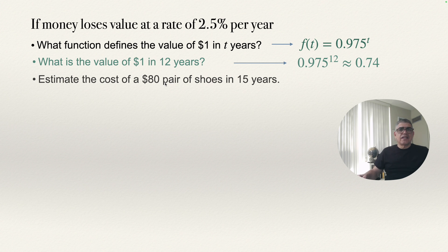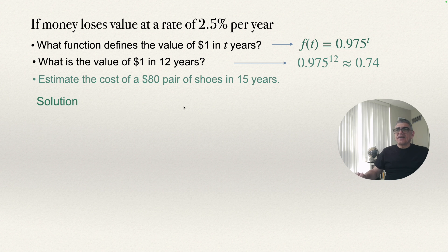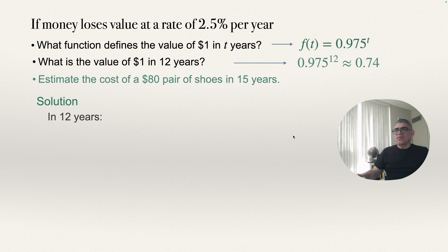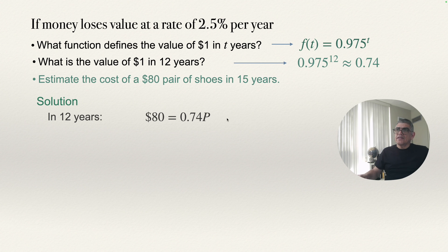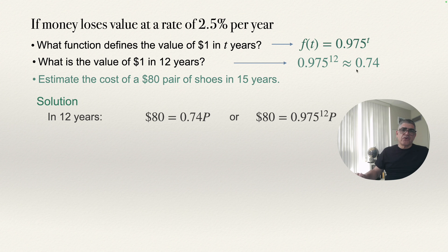Now we can answer the last question: estimate the cost of an $80 pair of shoes in 15 years. Let's write the solution. We know that in 12 years I can buy only 0.74 of something I can buy now with one dollar. So in 12 years, with $80, I can buy 0.74 of whatever I can buy now with $80 — for example, this pair of shoes. Or I can say with $80 I can buy 0.975^12 pairs. With this 0.975^12 is how I compute the 0.74.